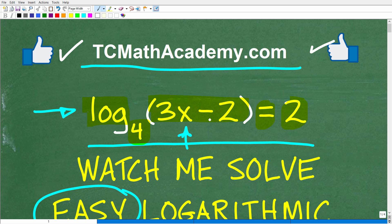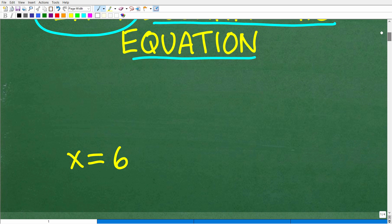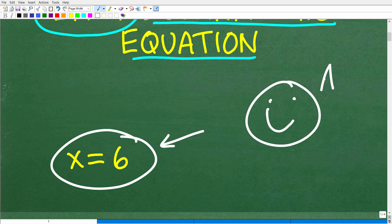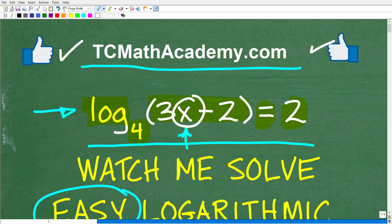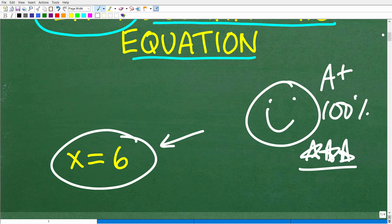So log base 4, 3x minus 2 equals 2. What is x? Let's go ahead and take a look at the solution to this equation, and the solution is x equals 6. So if you're able to solve this and this was actually pretty easy for you, we have to celebrate by giving a nice slow happy face, an A plus, 100% and multiple stars. So you can brag to your friends and family that indeed you are a certified professional expert in solving log equations. You can feel great about yourself - they don't know how to solve a log equation, and I do.